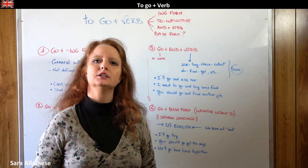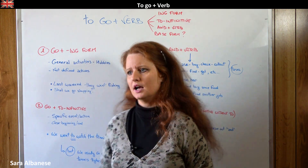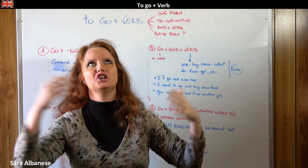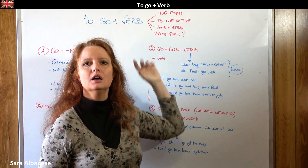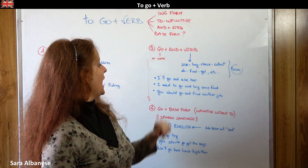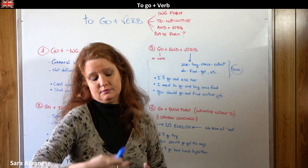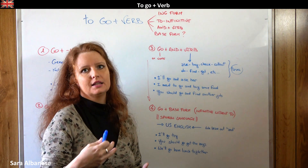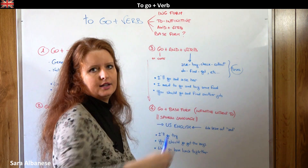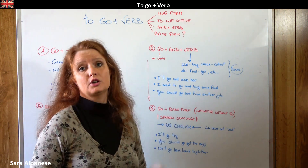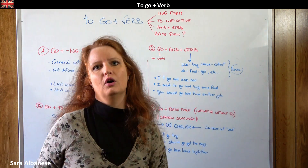Examples: 'I go and ask her' — I have to go there to ask her. 'I'll go asking her' would be wrong since it's not a general activity — it's a specific task. 'I need to go and buy some food' means I need to go out in order to buy food — a specific task. 'You should go and find another job' — your task is to find another job. This structure is absolutely fine in both British and American English.